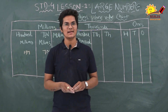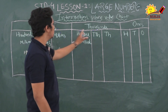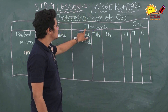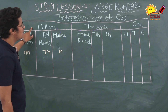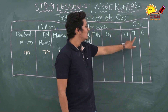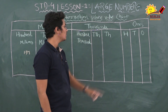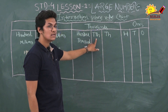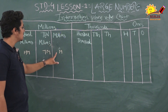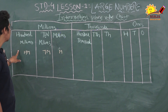Now let's learn about the international place value chart. Just like the Indian place value chart, there are three periods in the international place value chart. From the right: the first period is ones, the second is thousands, and the third is millions. There are three places in the ones period: ones, tens and hundreds. In the thousands period there are three places: thousands, ten-thousands and hundred-thousands. The millions period has million, ten-million and hundred-million.